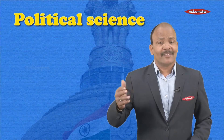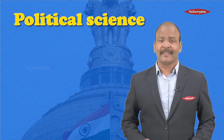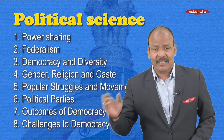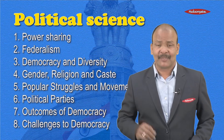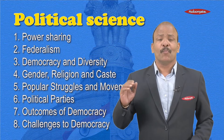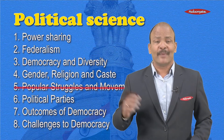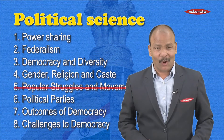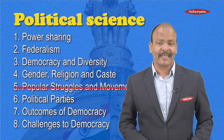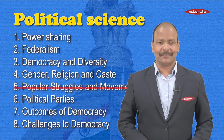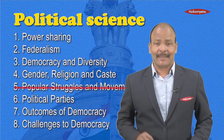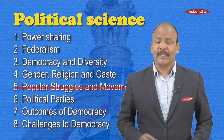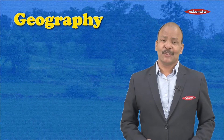Talking about Political Science - altogether in the textbook you have eight chapters. The good thing is out of these eight chapters, the fifth one - that is Popular Struggles and Movements - is deleted or omitted for the exams. So you need to prepare for only seven chapters.